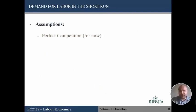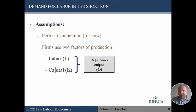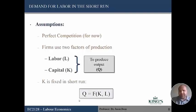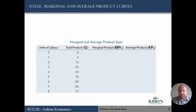We're going to assume perfect competition and we're in the short run, so capital is fixed. We have two factors of production: labor and capital, with capital fixed — denoted by a bar over K. Looking at a data example: if we have zero labor, we produce nothing. Hiring one person yields four units of output, and hiring a second person brings total output to 16.